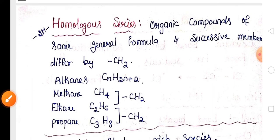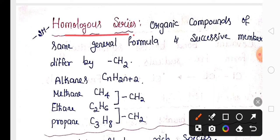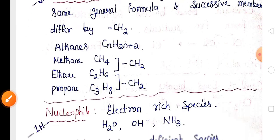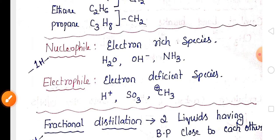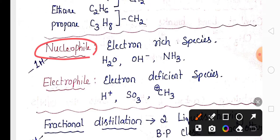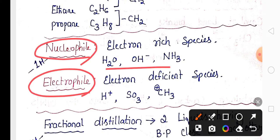The definition of homologous series and their examples are very important. The members differ by CH2 — very important for two marks. The definitions of nucleophile and electrophile, along with examples, are important for one or two marks.